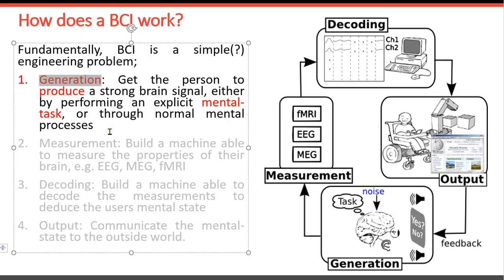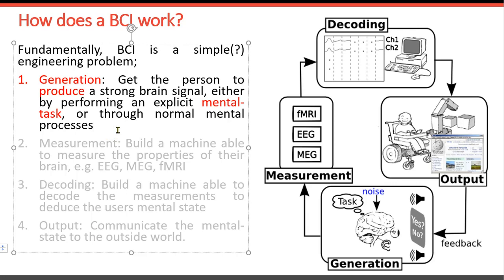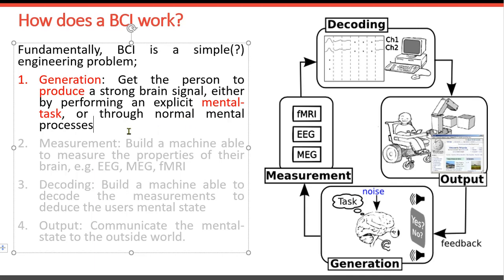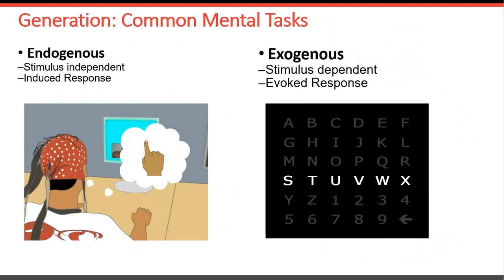Generation means getting a person to produce a strong brain signal, either by performing explicit mental tasks or through a normal mental process. We will see the different experimental paradigms used to obtain strong signals from the brain. In generating brain signals, there are some common mental tasks, and we can divide those into experimental paradigms called endogenous or exogenous.